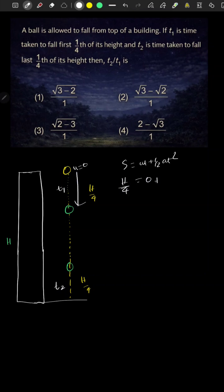u is 0 and a is 10. So h/4 = ½ × 10 × t1² = 5t1². Therefore, t1 = √(h/20).